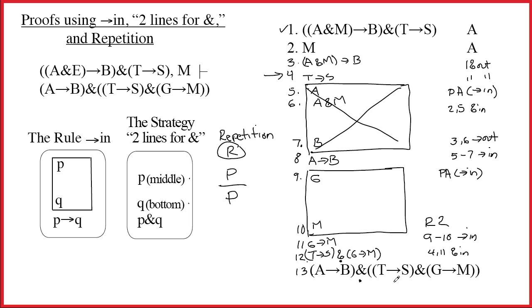And then for thirteen? Well, that's obviously A arrow B. That's line eight plus twelve. These are the two things we penciled in for our first two lines for ampersand. And so over here, we're going to write eight comma twelve ampersand in. And we're done. Any questions? Well, I hope not, because I can't hear you. Good luck with the studying.